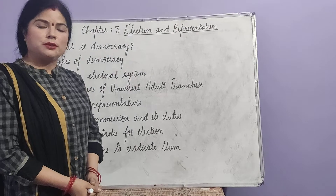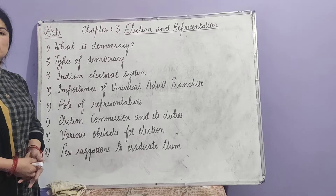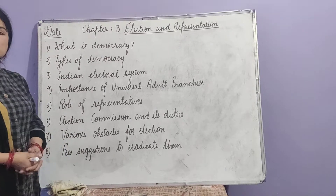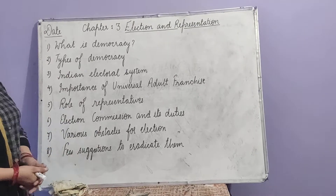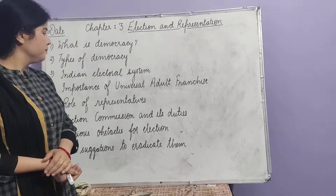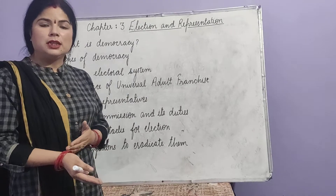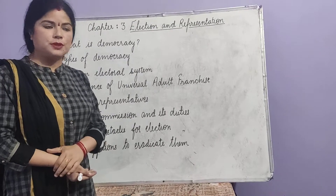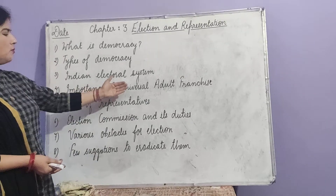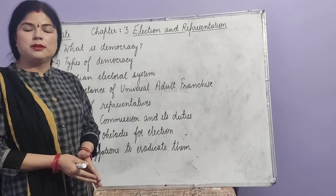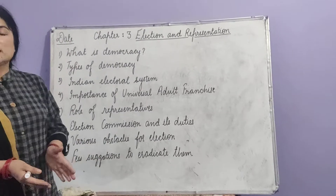In this chapter, the points we are going to cover are: what is democracy — we will discuss about democracy and how democracy can become the best form of government. Second is types of democracy. Next is the Indian electoral system — we will discuss about how elections go on in our country to choose representatives. Next is the importance of universal adult franchise, meaning the right to vote when people become 18 years old.